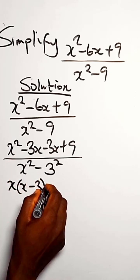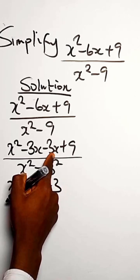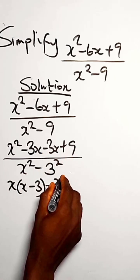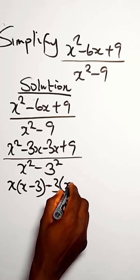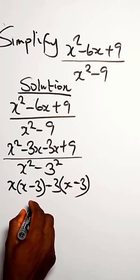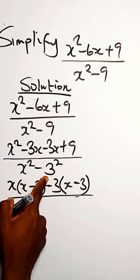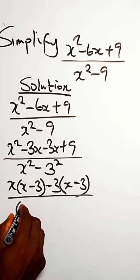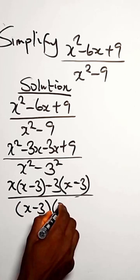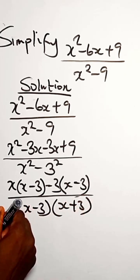For this we can group this and average this way: x into x minus 3, minus 3 we can factor out, 3 is common, into x minus 3. Divided by x squared minus 3 squared, we can have it as x minus 3 times x plus 3 when we apply the difference of two squares.